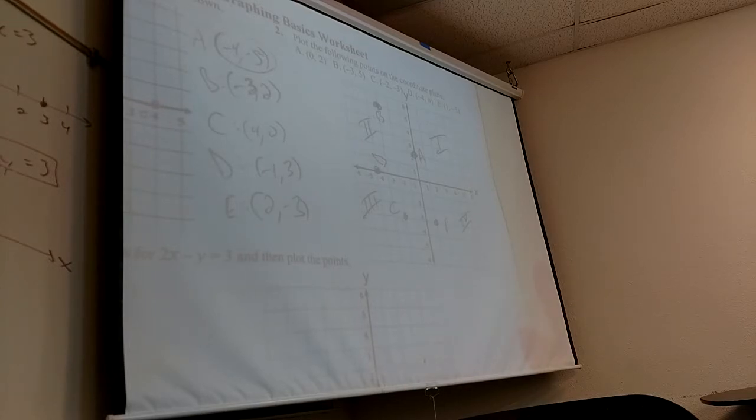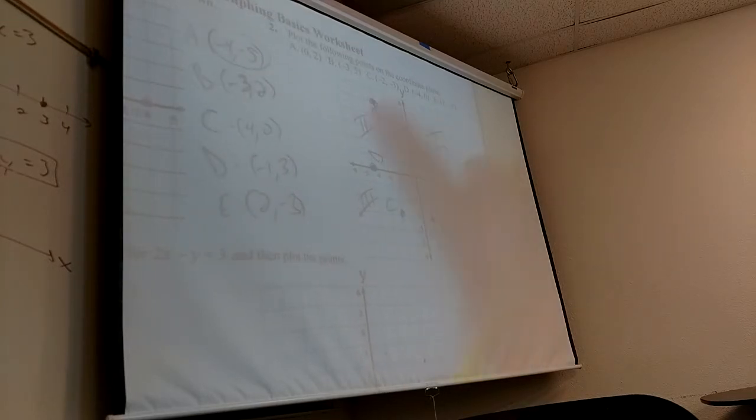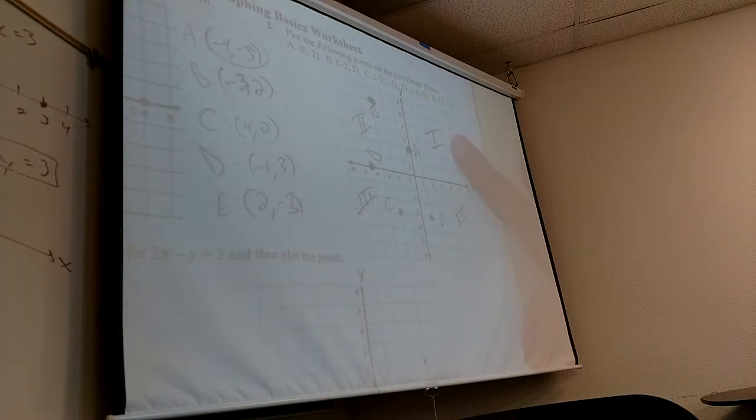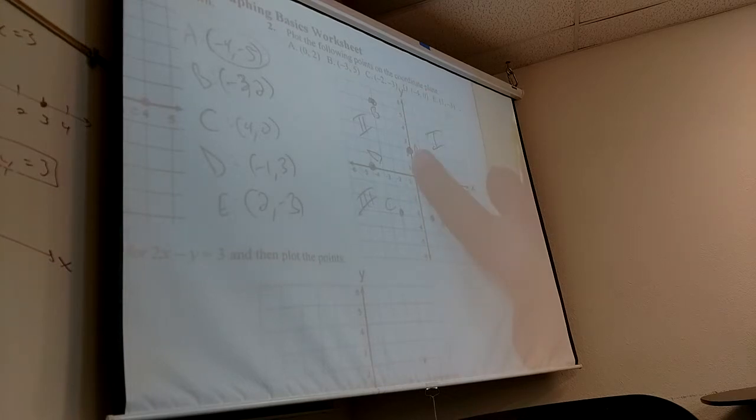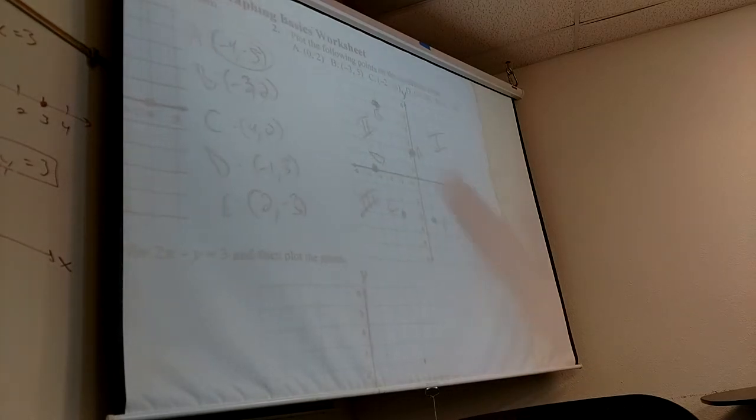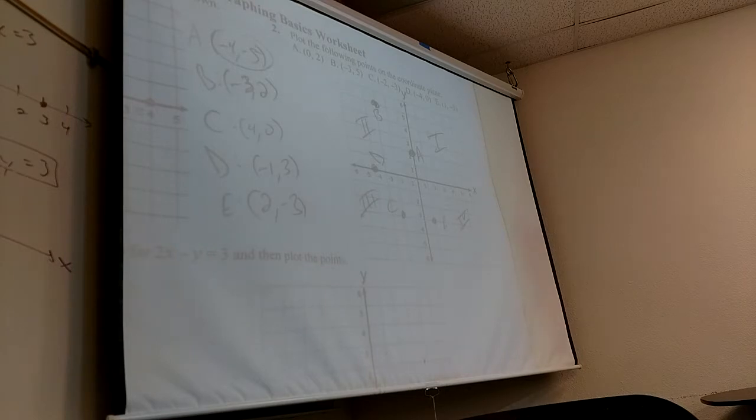So they ask you about quadrants in the book. If I said, are there any points that are in quadrant one, from what we graphed? Are there any in quadrant one? No. This one is actually on the y-axis. And which points are in quadrant two? Just B. In quadrant three, C. In quadrant four, E. So A is not in a quadrant at all.